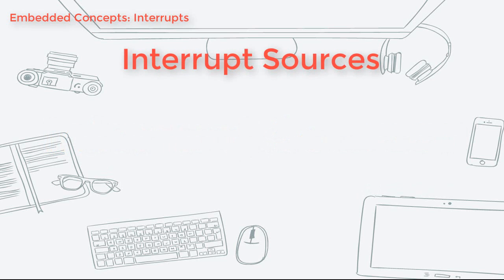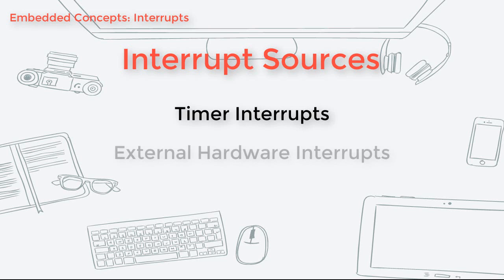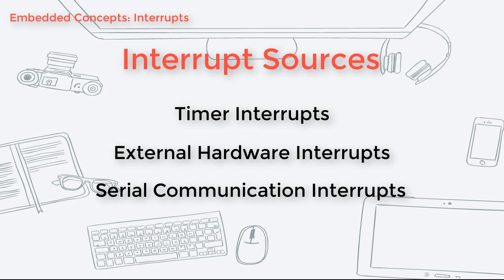Depending on the microcontroller, there are different sources available to trigger an interrupt. We have timer interrupts, external hardware interrupts, and serial communication interrupts, to name a few. The types of interrupt sources vary from the peripherals available in an MCU, which you can read from the MCU's datasheet.